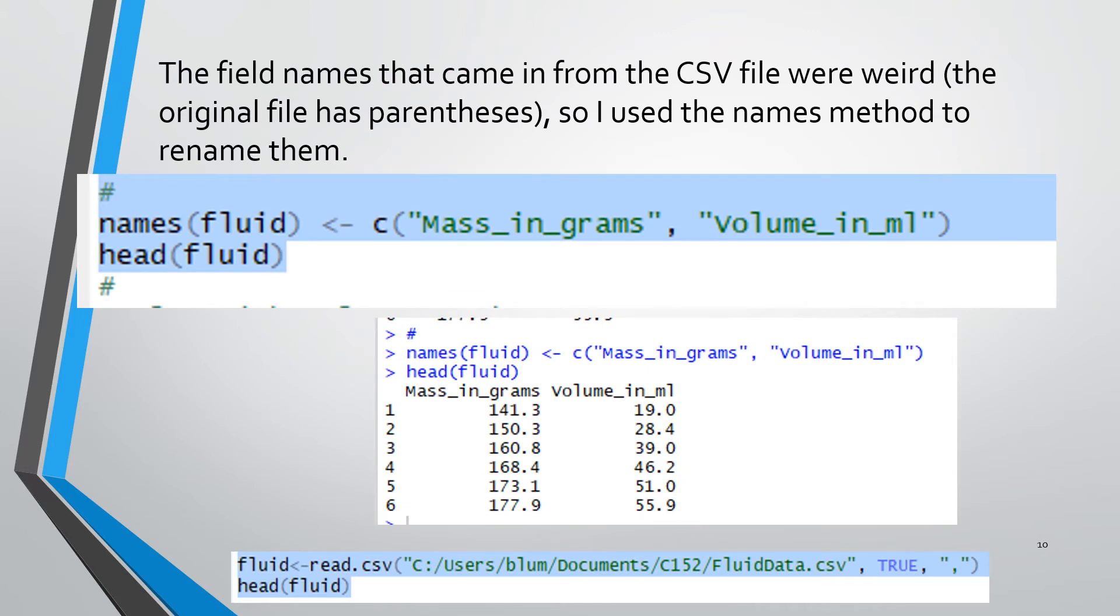Recall that line shown at the bottom of this slide where we read in the data file using the read.csv method and it became fluid. Fluid is a data frame. That means it's a related set of vectors. And those vectors have names. And the second argument of the read.csv method says that for now those names are coming from whatever was in the header of the data file.